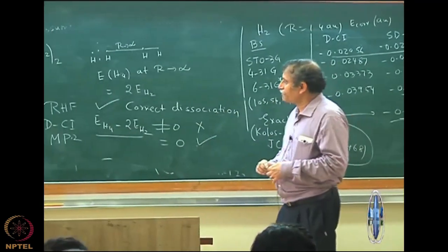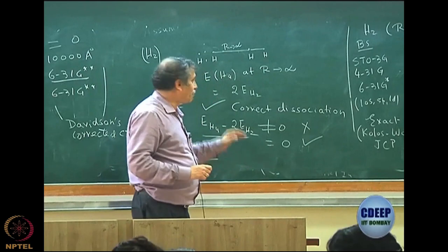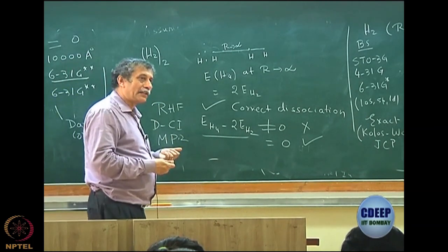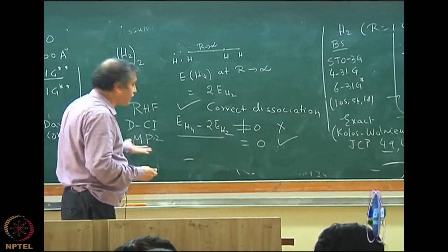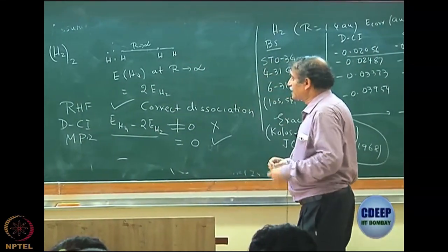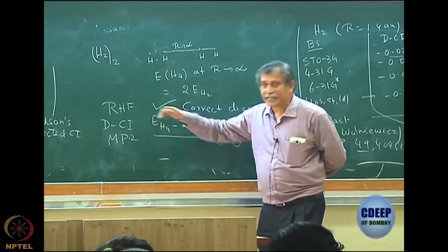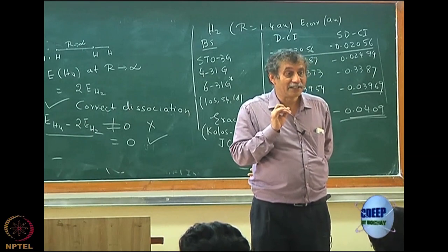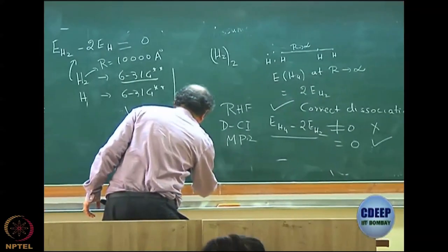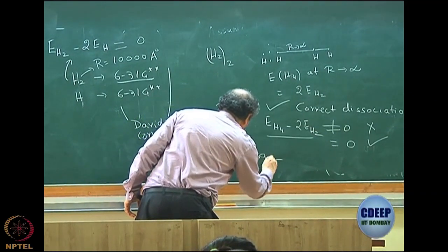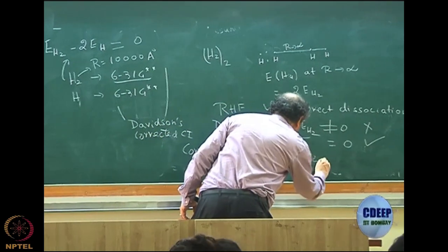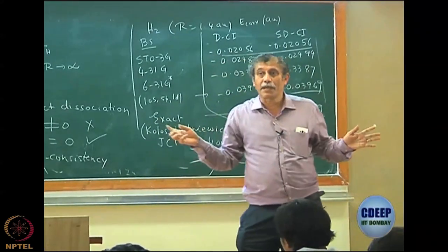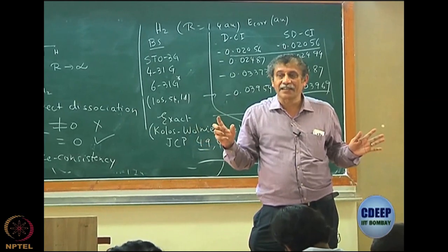This issue was discovered more in the 1970s, when Davidson was very active. His correction made DCI dissociate correctly for all such cases. This property of correct dissociation is known as size consistency. A size-consistent theory is one that correctly handles dissociation. DCI is not a size-consistent theory.